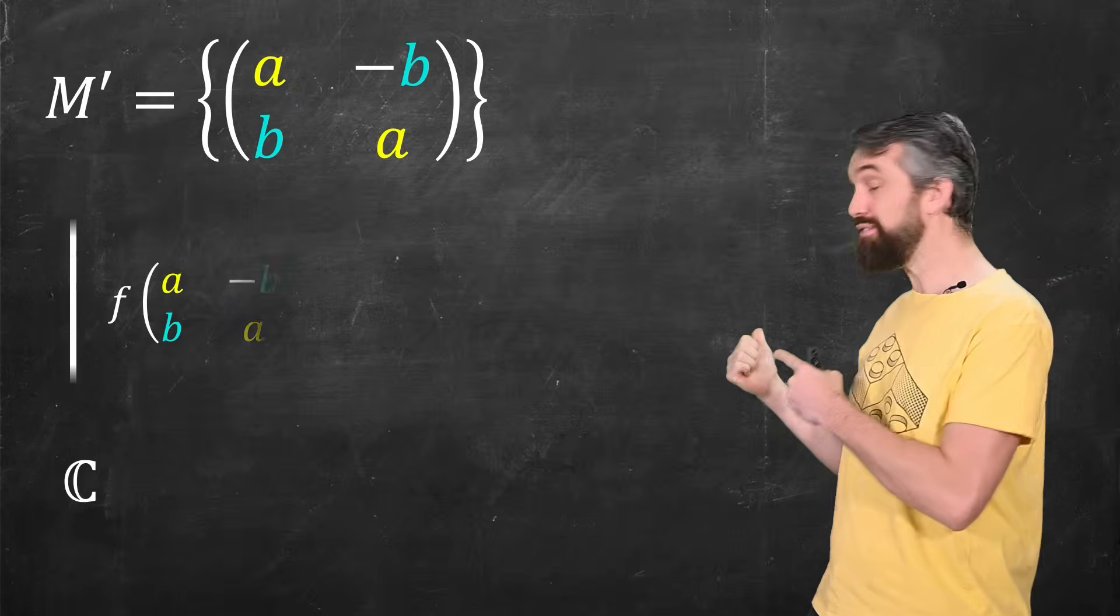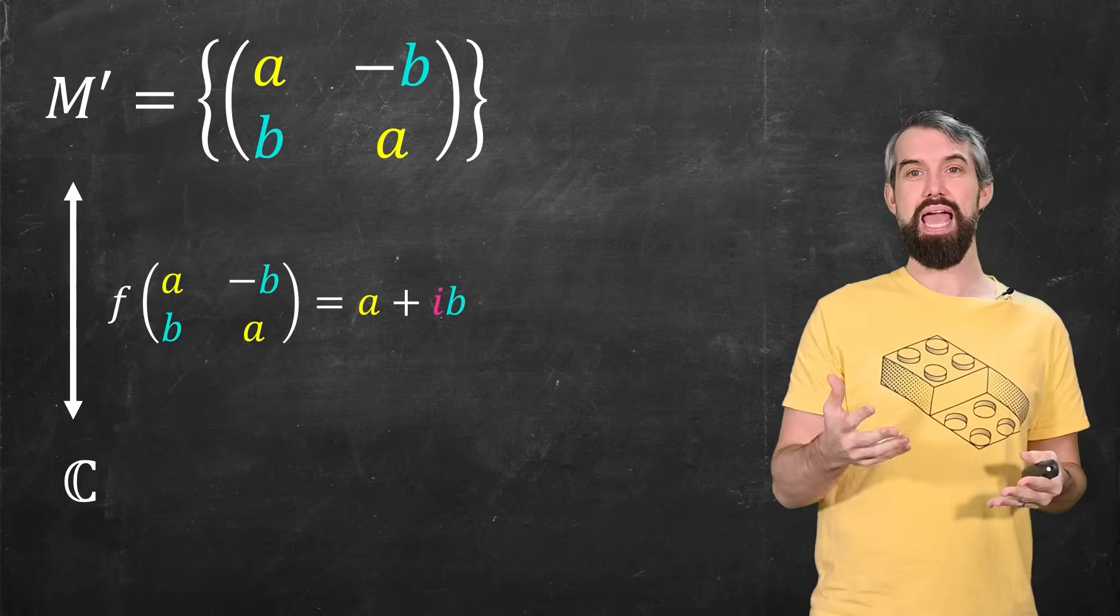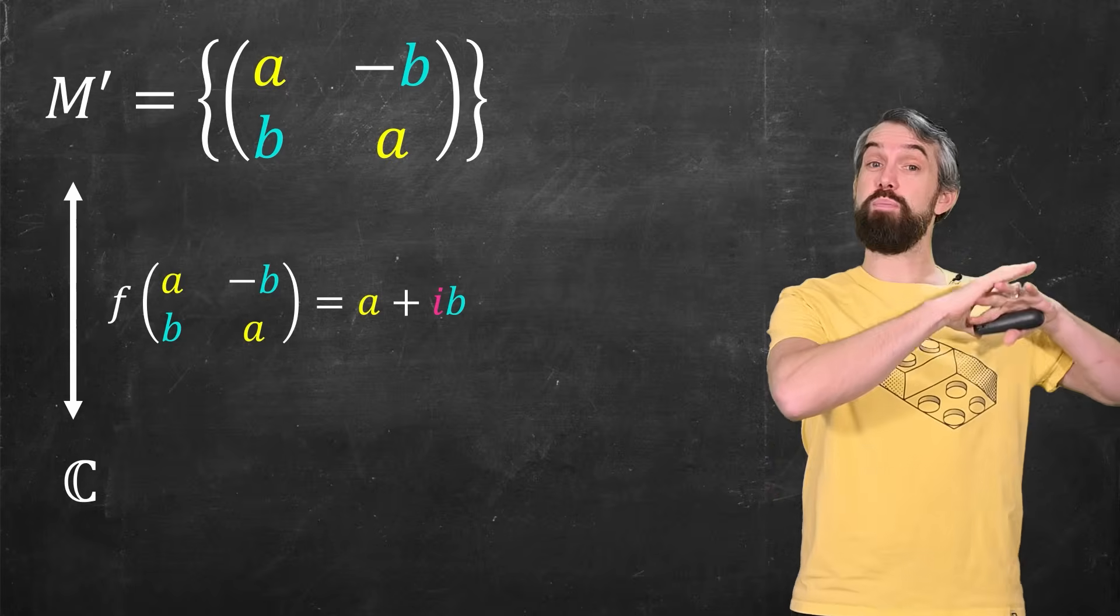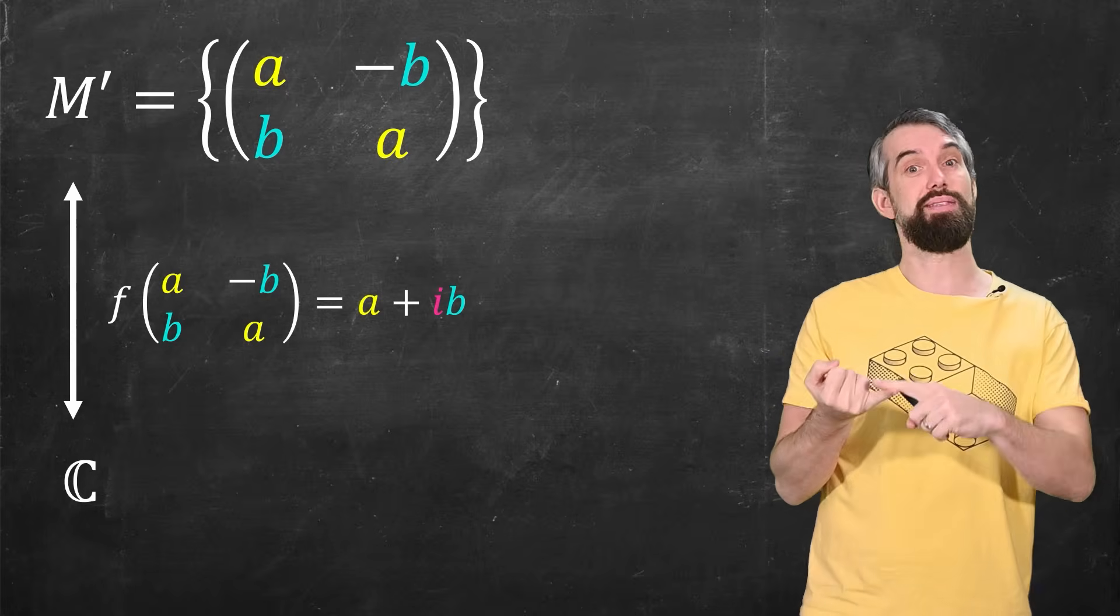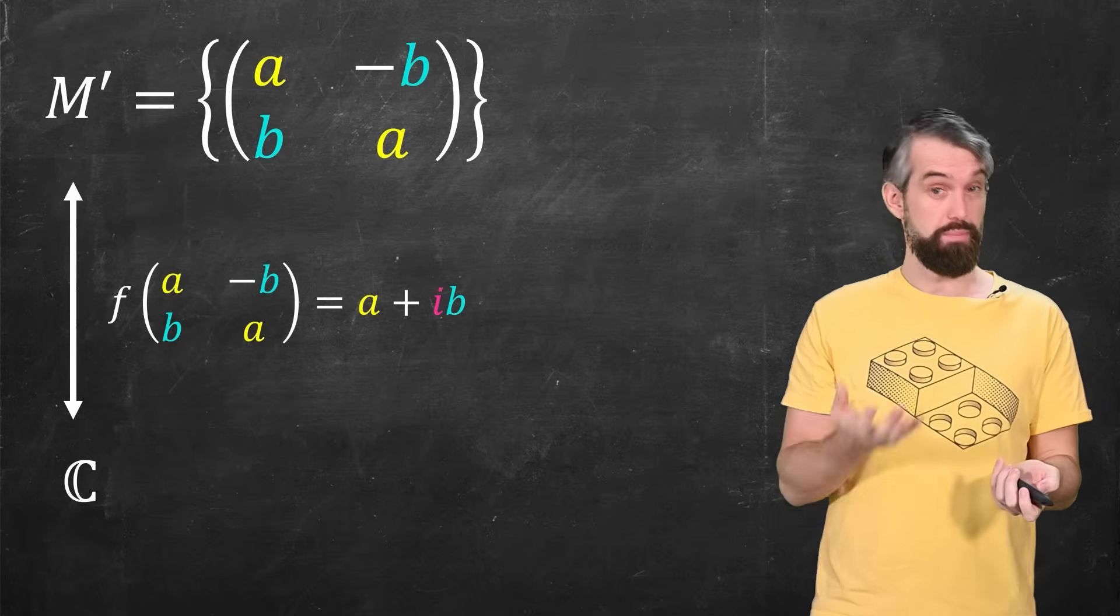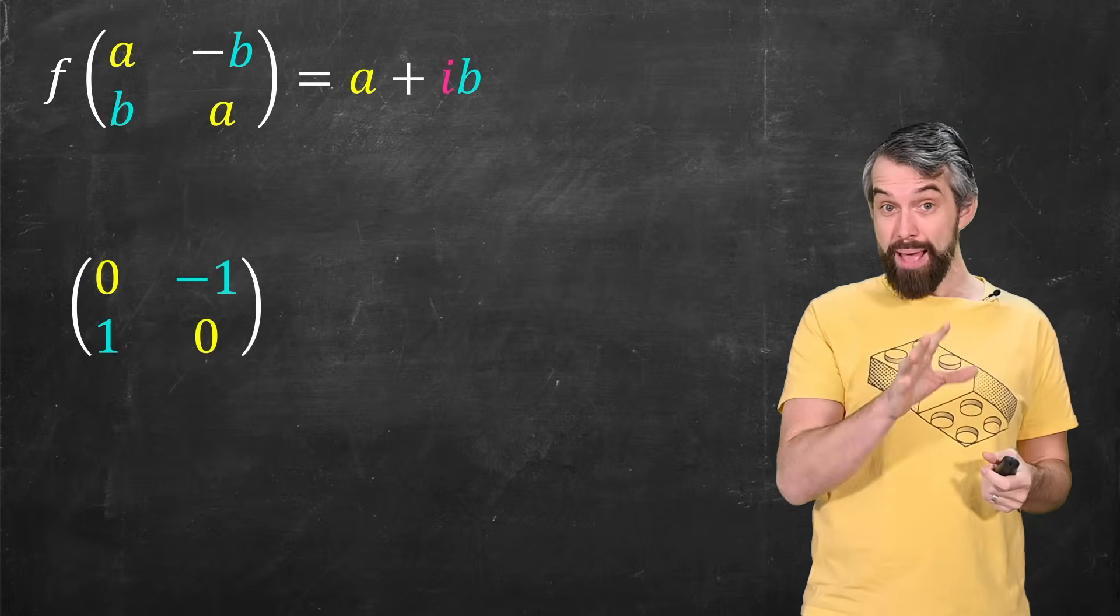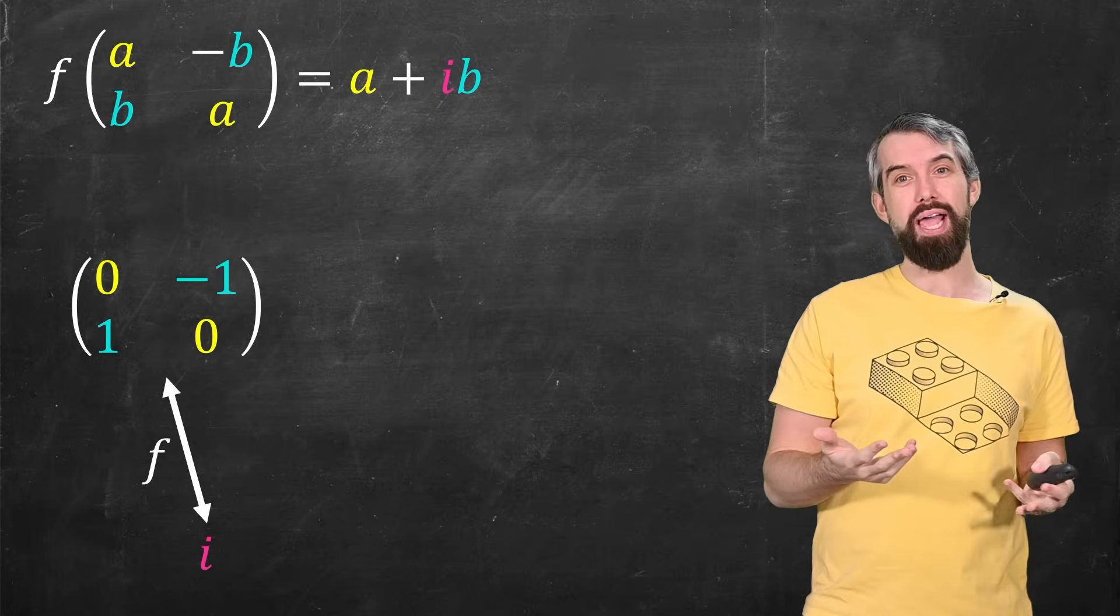For example, there's this function that takes a matrix of that form, A minus B, B, A, and it sends it to A plus IB. This is a bijection from the perspective of sets. They are the same. Now we have to ask, are they the same in terms of their additive structure? And what about their multiplicative structure? If I take something like this matrix, 0 minus 1, 1, 0, so that maps to 0 plus 1 times I, or in other words, just becomes the number I.